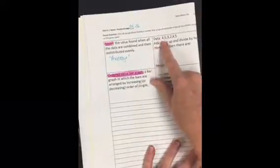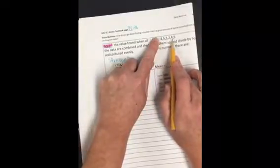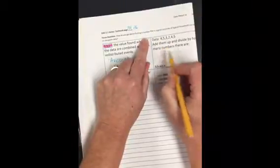And so we have a data set over here: 4, 5, 3, 2, 4, and 5. To get the average or the mean, we add them up and then divide by how many numbers there are. So we have 9, 12, 14, 18, 23.